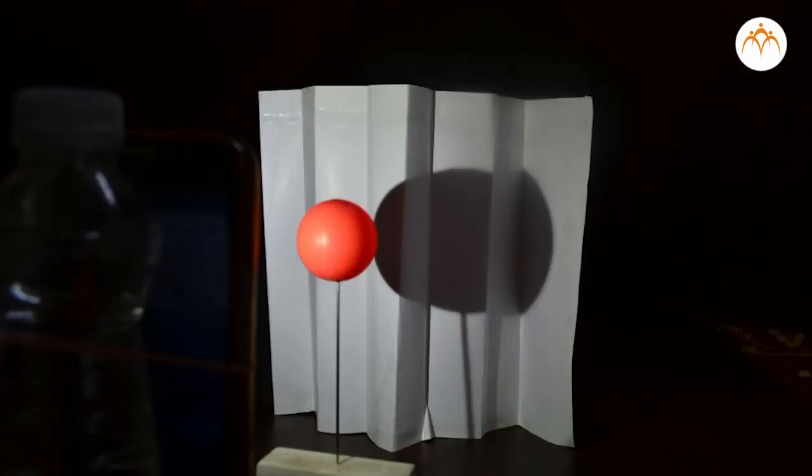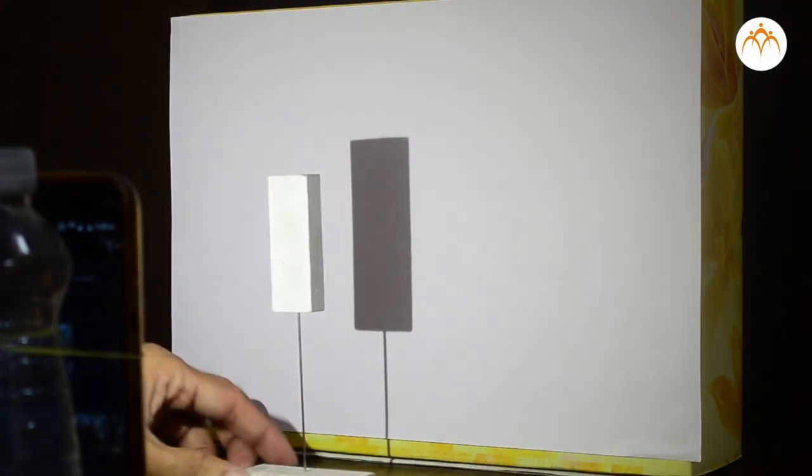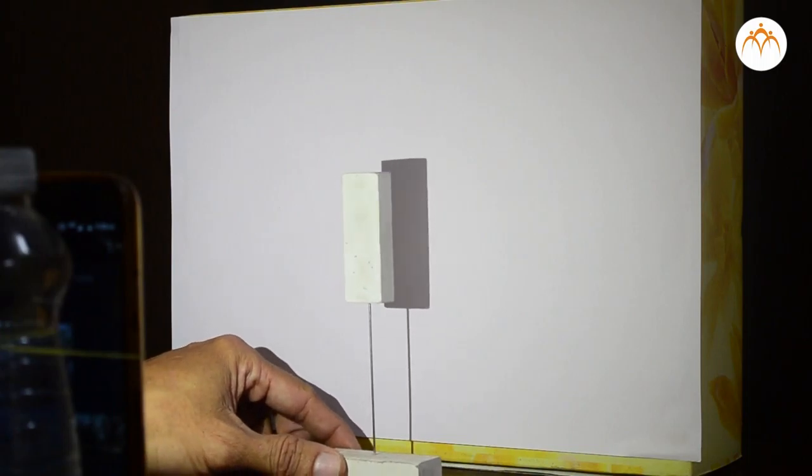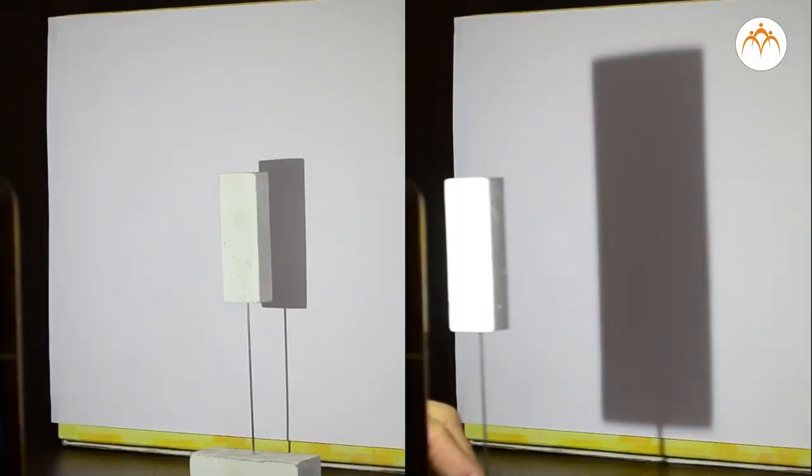Will the shape and size of the shadow be same when surface is not flat? We can fold this paper and place it in place of flat screen. Image is different on rough surface.